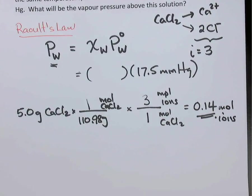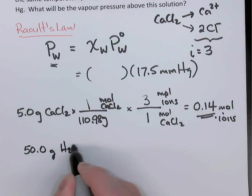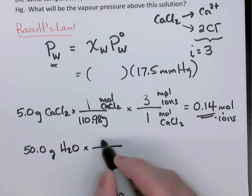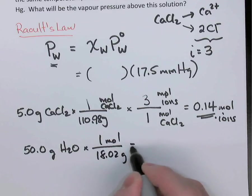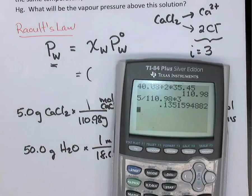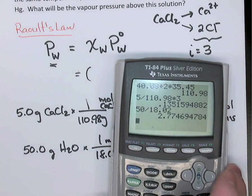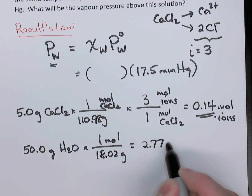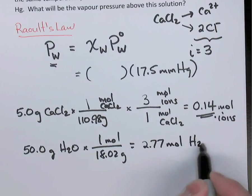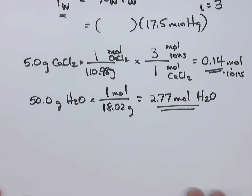Now, the water itself, we were told, was 50 grams. So let's take 50 grams of water and find how many moles that is. That's one mole of water, 18.02 grams. So 50 divided by 18.02, 2.77 moles of water. And I'm trying to pay some attention to significant digits as I do these calculations.